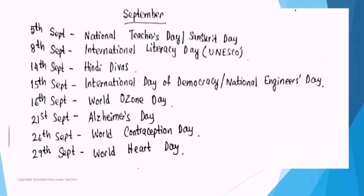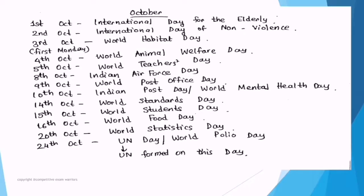September important dates: 5th September — National Teachers Day, birthday of Dr. Sarvepalli Radhakrishnan, also celebrated as Sanskrit Day. 8th September — International Literacy Day (UNESCO headquarters in Paris, France). 14th September — Hindi Divas. 15th September — National Engineers Day and International Day of Democracy. 16th September — World Ozone Day. 21st September — World Alzheimer's Day. Alzheimer's is a brain disease where one tends to forget things and cannot perform daily activities — research is currently underway to treat or control it. 26th September — World Contraception Day. 29th September — World Heart Day.